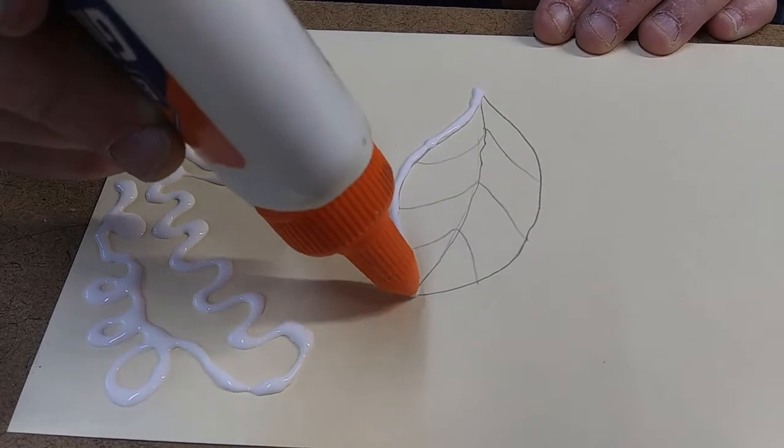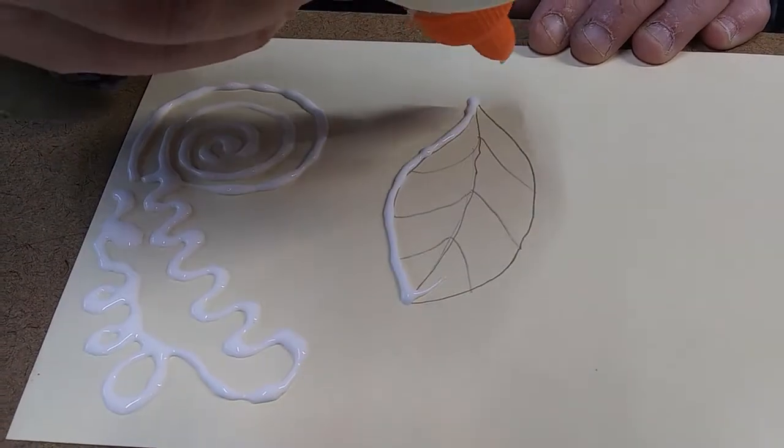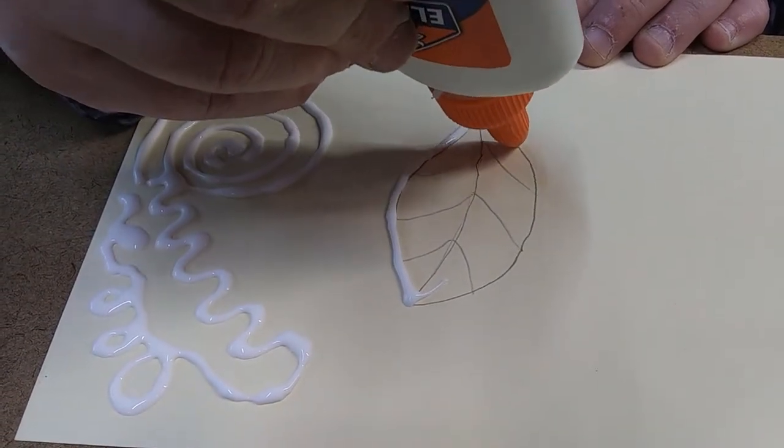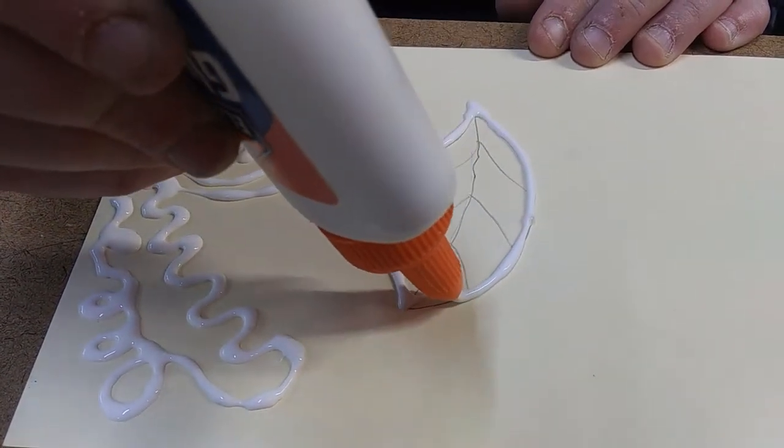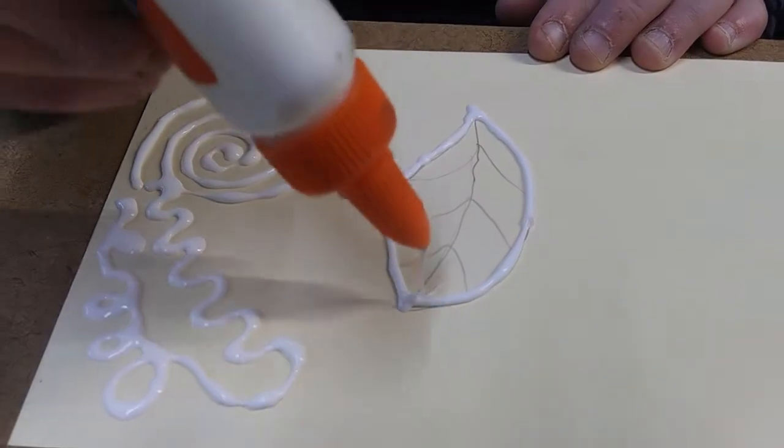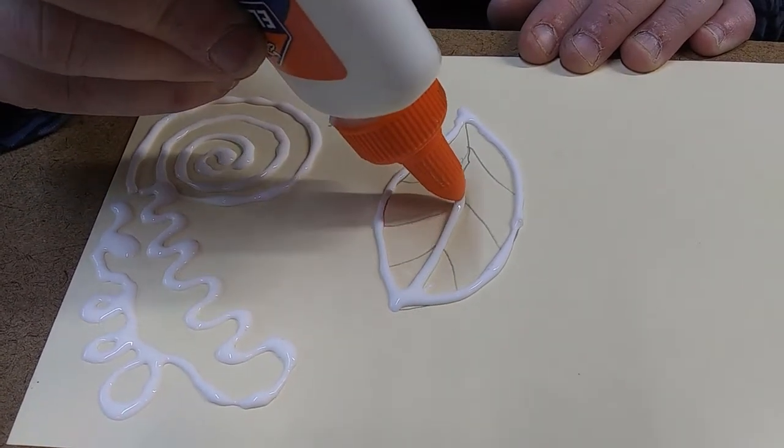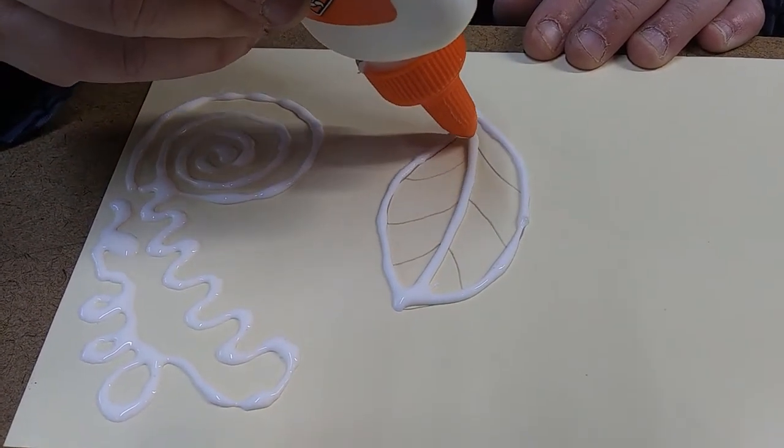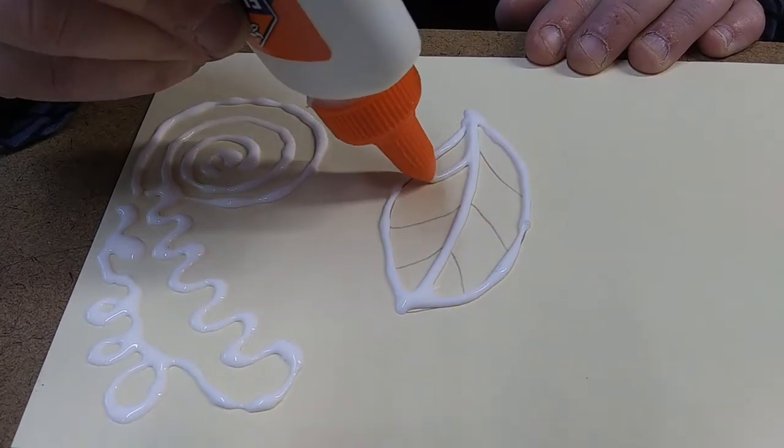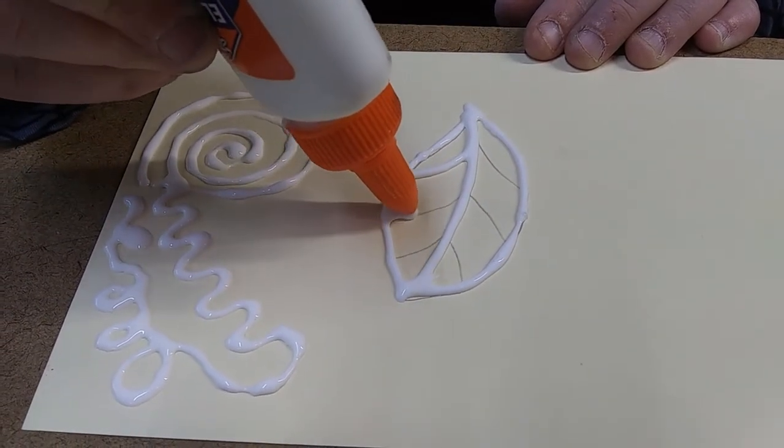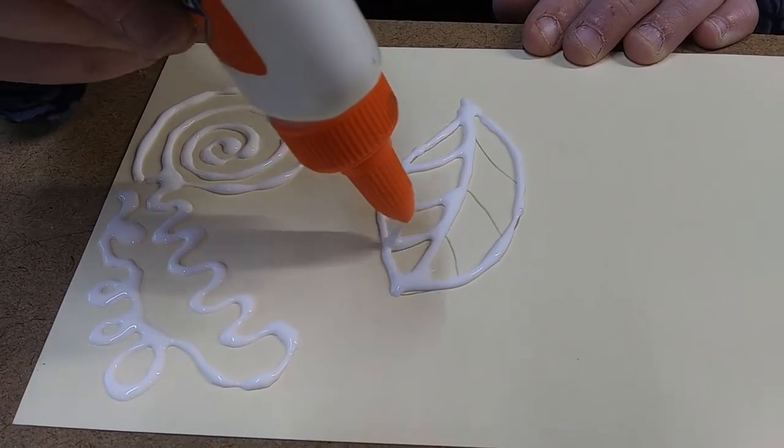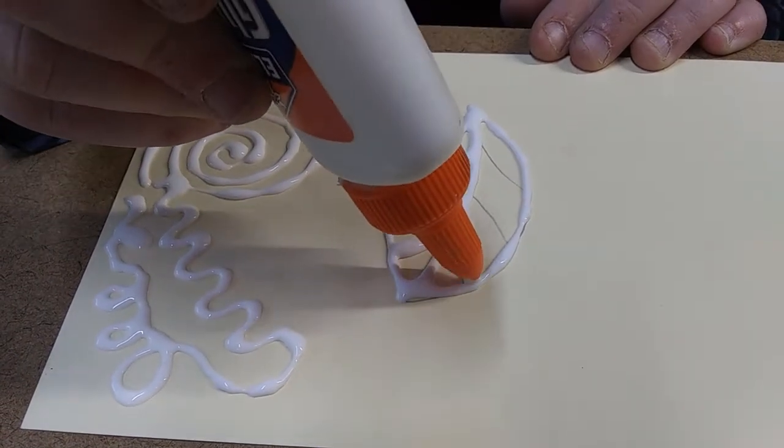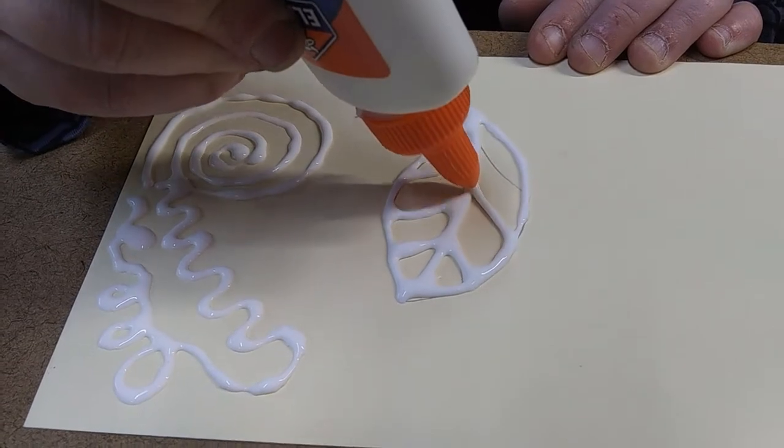And this is a project that you could do with younger friends. If they wanted to draw a picture with a pencil, then an adult or an older child could do the glue lines for them if that part is a little bit difficult. And after I finish my glue lines, that's the time where I will need to get out my table salt, and I'll explain what we're going to be doing next.